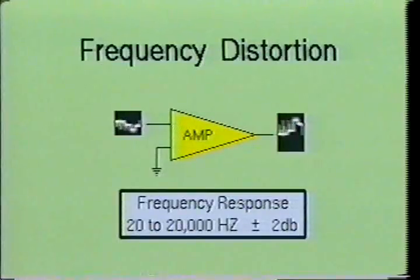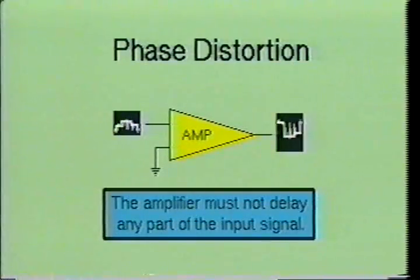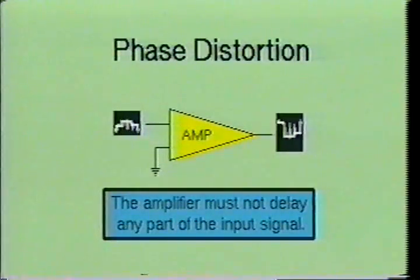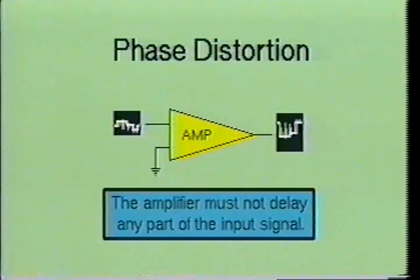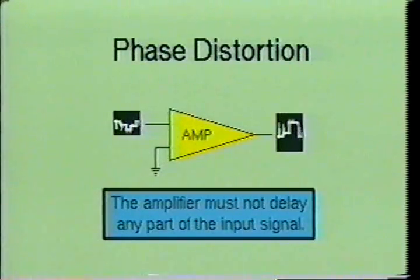The frequency response specifications indicate the relative output over a specific frequency range. Phase distortion will occur when certain bands of frequencies require different amounts of time to pass through an amplifier. Even though the sine wave consists of a single frequency, other more complex waveforms are derived by mixing the sine wave with even or odd harmonic waves of the sine wave. For the amplifier to produce an exact reproduction of the input signal, it must not delay any part of the signal or the signal will become distorted.